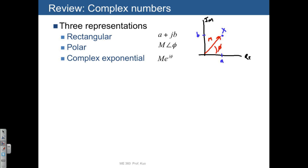The relationship between that and the complex exponential form is given by the fact that e to the j phi is just equal to cosine phi plus j sine phi. And so if you had that quantity multiplied by M, that means that you have a real part M cosine phi and an imaginary part M sine phi that go together.